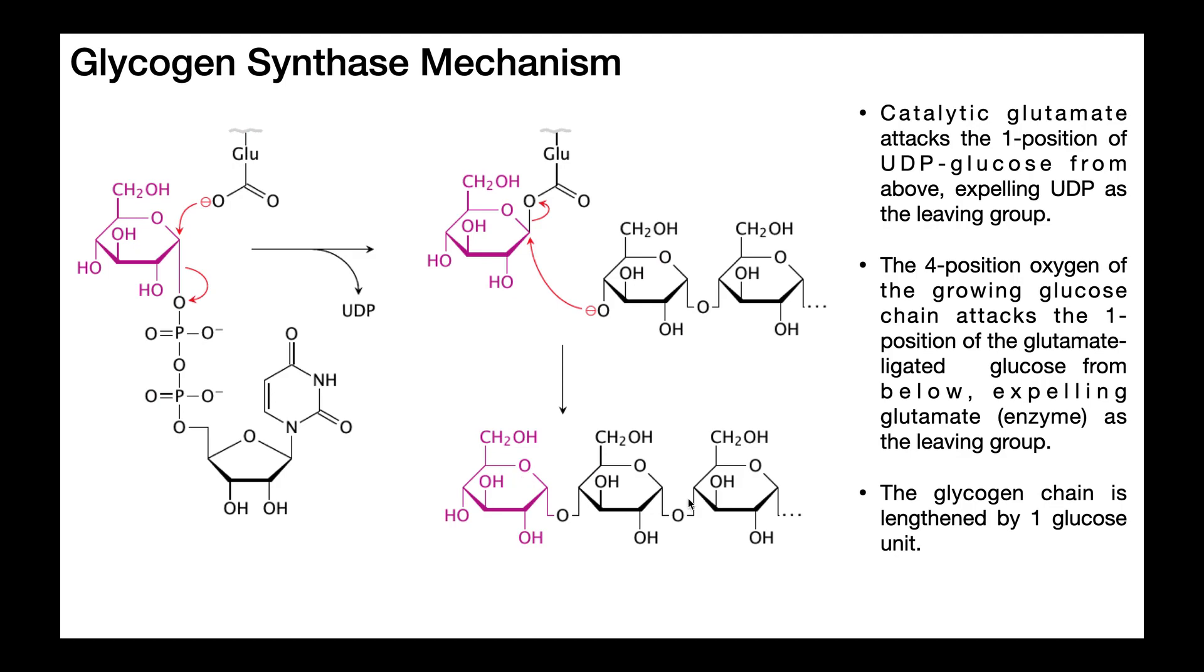One thing to understand here from this mechanism is why glycogen has so many alpha 1 to 4 linkages. If we look at this newly added glucose, notice that its one position is now covalently attached through this oxygen of the four position of the previous glucose in the chain of glycogen.